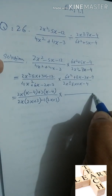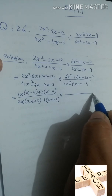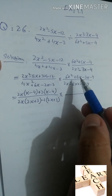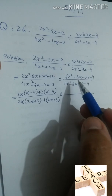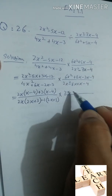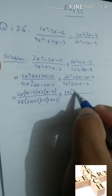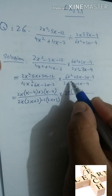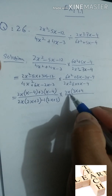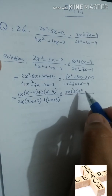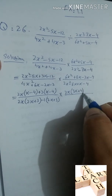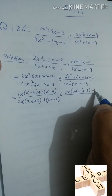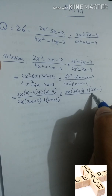Next, for 6x² + 8x − 3x − 4, we take 2x common from the first two terms to get 2x(3x + 4), and then minus 1 common from the remaining terms gives minus 1(3x + 4). So the factors are (2x − 1)(3x + 4).